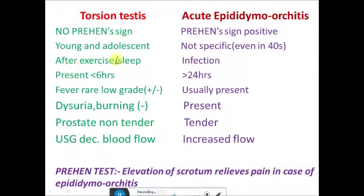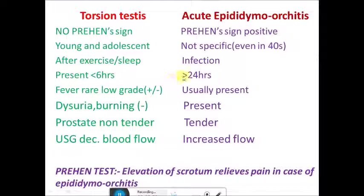Torsion testes usually presents after exercise or while the patient is sleeping. Epididymal orchitis is an infective condition. Torsion testes usually presents within six hours as the pain is very severe and the patient comes to emergency immediately, whereas in epididymal orchitis there can be a delay of more than 24 hours. Fever, if present in torsion, is usually low grade, but in acute epididymal orchitis fever is usually present. In torsion testes there is no dysuria or burning micturition, while in epididymal orchitis it is present.